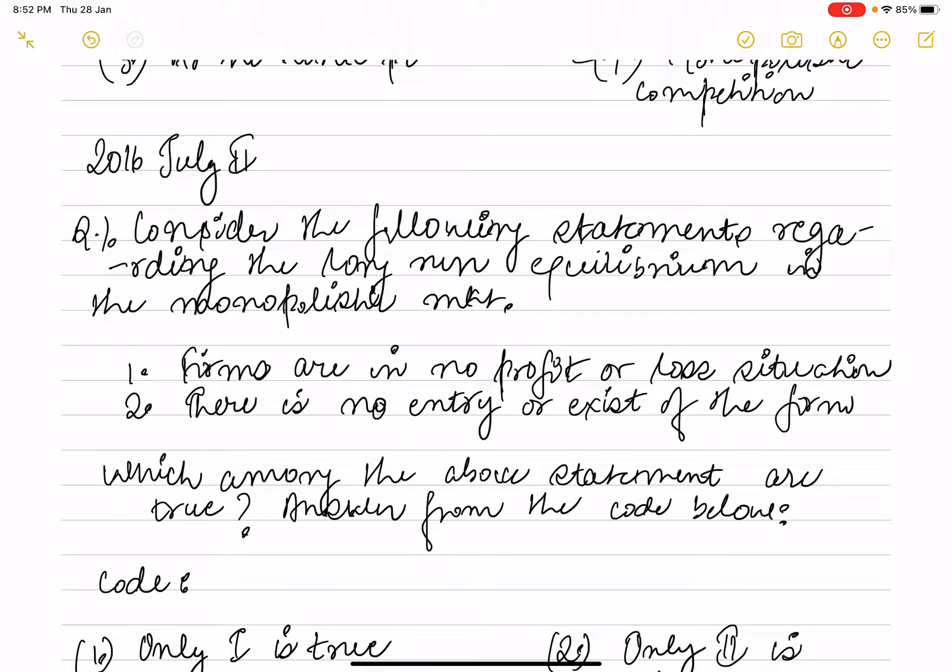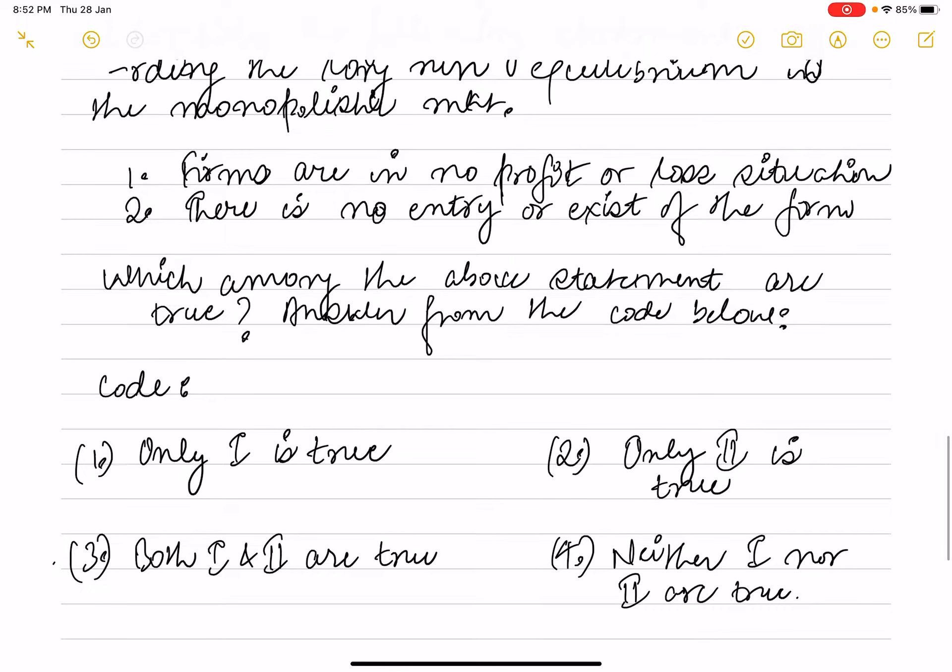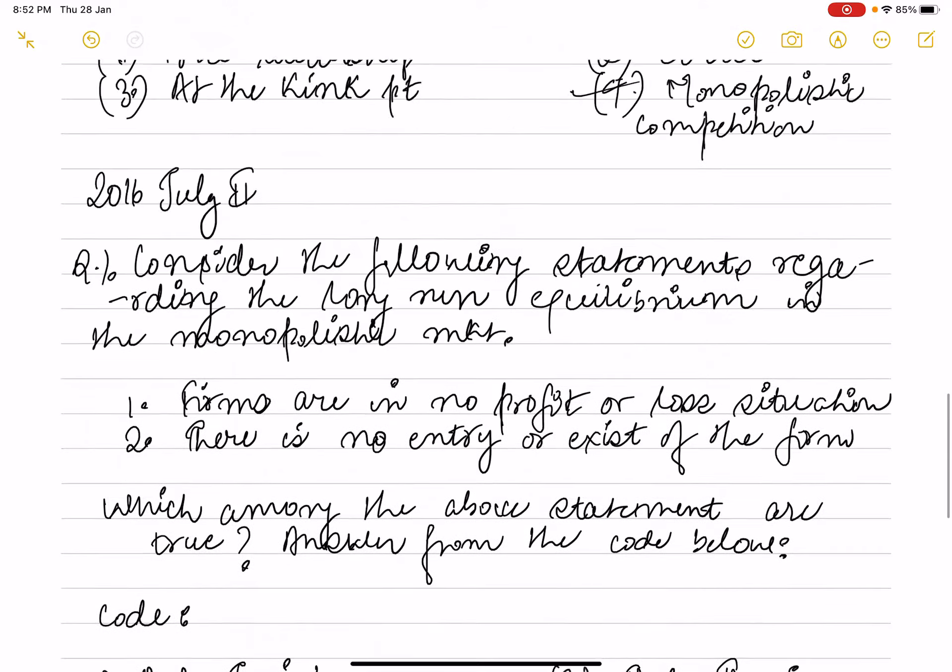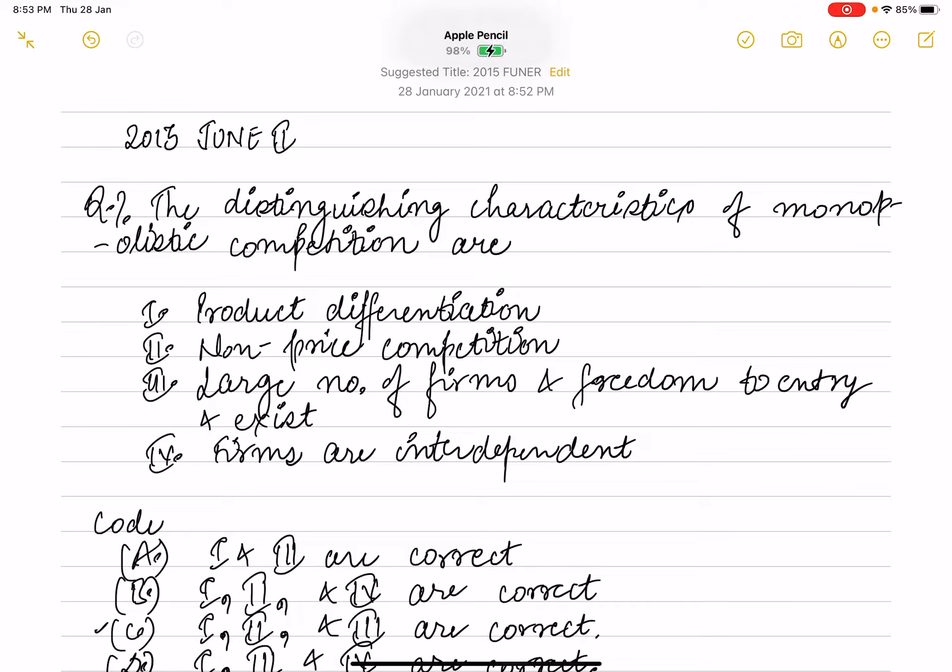Next question. This was asked in July 2016 paper two. The question is: consider the following statements regarding the long run equilibrium in monopolistic market. First, firms are in no profit no loss situation. There is no entry and exit of the firm. Which statements are true? In long run equilibrium both things happen: no profit no loss situation and no entry exit of firms. So accordingly both first and third are true.